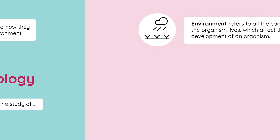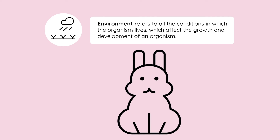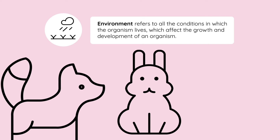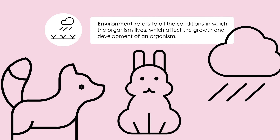That brings us on to environment. An environment refers to all of the conditions in which the organism lives, which affect the growth and development of an organism. These factors can be living or non-living — organisms might have to deal with predators, but they might also have to deal with things like rainfall or the amount of light.